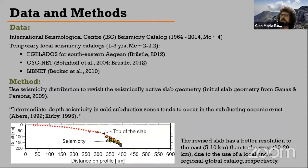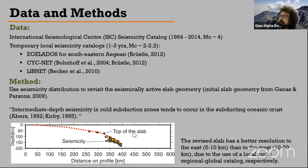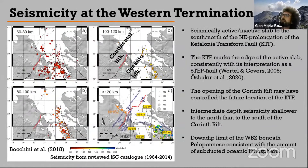To address these questions, I used seismicity hypocenters from global and local networks. For the local networks, I had access to some of the best catalogs available from the southeastern Aegean. The approach was to refine the geometry of the seismically active slab starting from available models, and then relate the refined geometry to the distribution of seismicity at both shallow and intermediate depth. Resolution is higher in the southeastern Aegean because of available local seismic network data. I now start from the western termination.